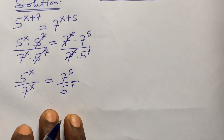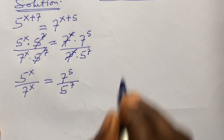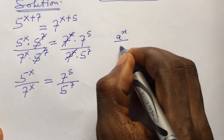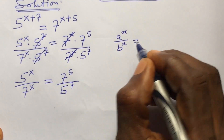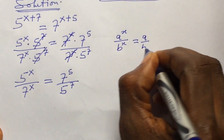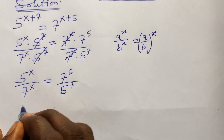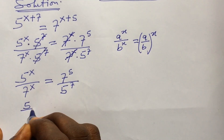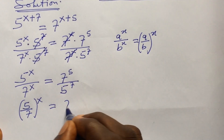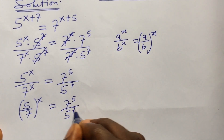According to the law of indices, if you have a to the power of x over b to the power of x — because the powers are the same — this equals a over b, all to the power of x. So we can rewrite the left-hand side as 5 over 7, all to the power of x, equal to 7 to the power of 5 over 5 to the power of 7.